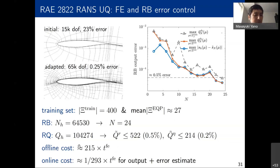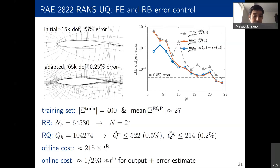In terms of training cost, it is quite expensive — about 200 times a single finite element solve — and we are trying to improve this. But in terms of online acceleration, we achieve about a factor of 300 speedup including the evaluation of the error estimate.